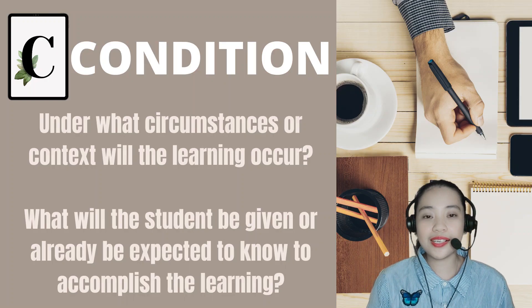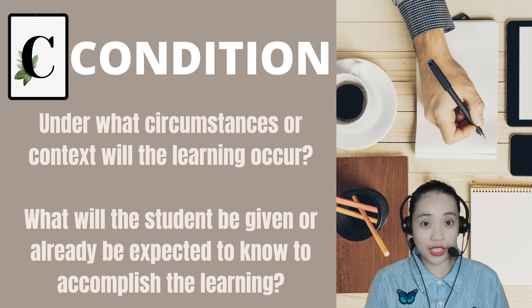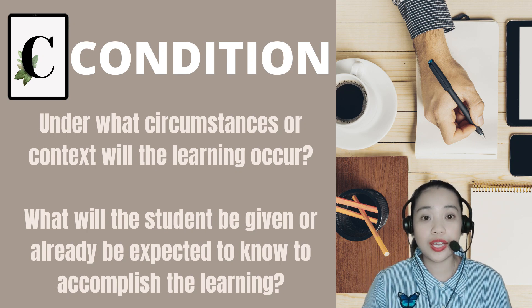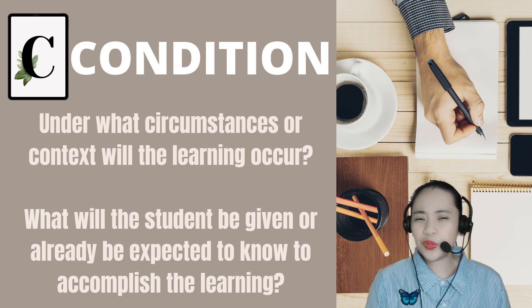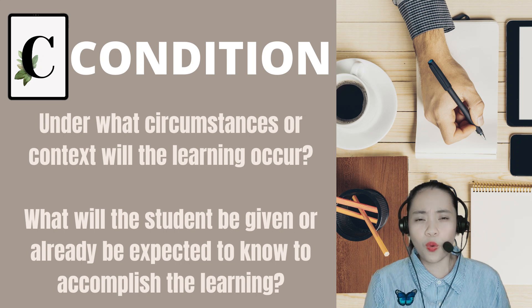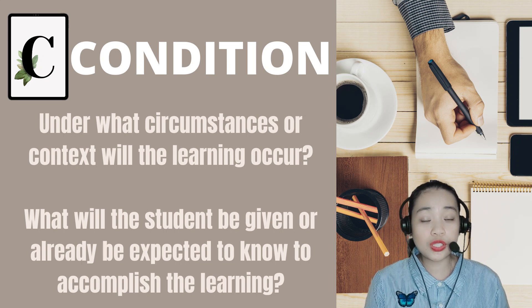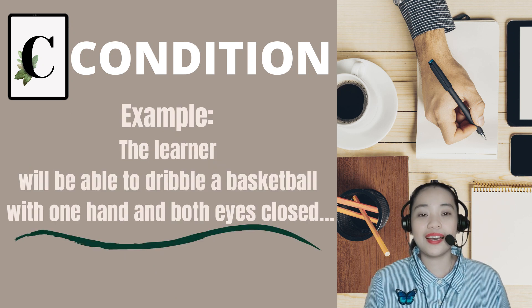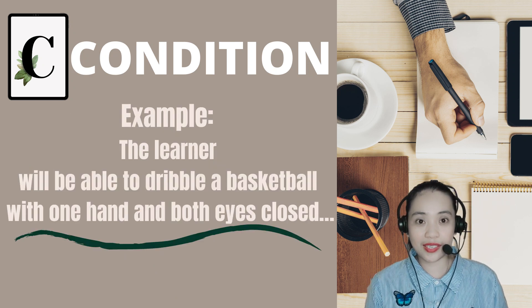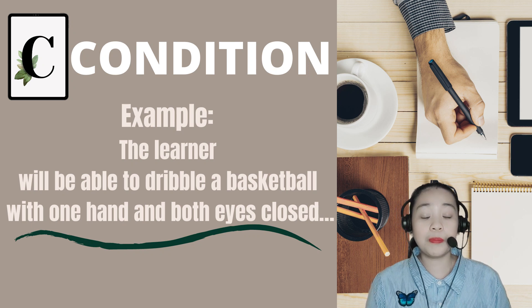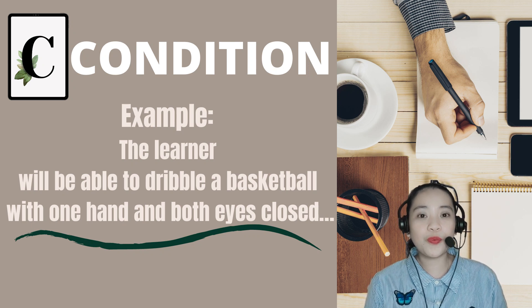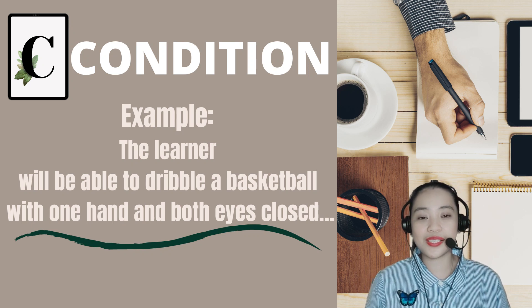C stands for CONDITION. It answers the question: how? Under what circumstances or context will the learning occur? What will the student be given or already be expected to know to accomplish the learning? Example: the learner (actor) will be able to dribble a basketball (behavior), with one hand and both eyes closed (condition).